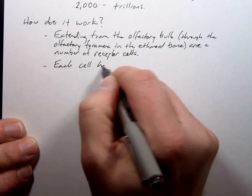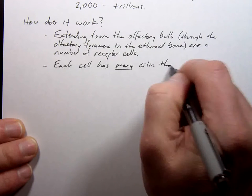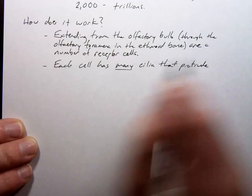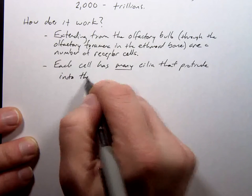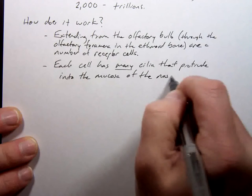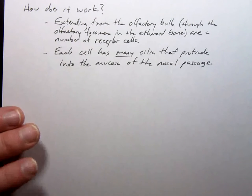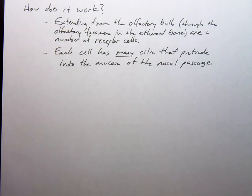Each cell has many cilia that protrude into the mucosa of the nasal passage. Mucosa is another word for mucous membrane, which means the membrane on the outside of the nasal passage that is exposed to the nasal passage and also the mucus that covers it. Together those things make what's called the mucosa.